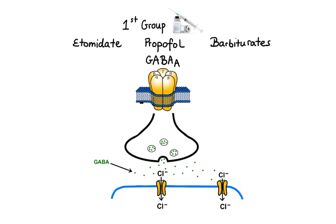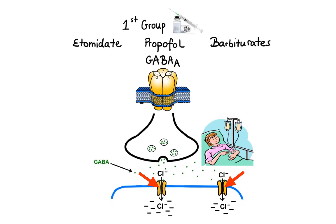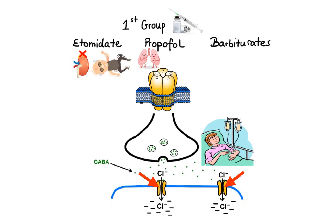When etomidate, propofol and barbiturates bind to specific sites on the GABA-A receptor, they prolong opening of the channel, suppress neuronal excitability and promote unconsciousness. Regarding side effects: etomidate can cause adrenal suppression and transient skeletal muscle movements including myoclonus. Propofol is known to cause respiratory depression and hypotension. Barbiturates can cause apnea, cough, bronchospasms and respiratory depression.